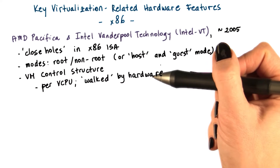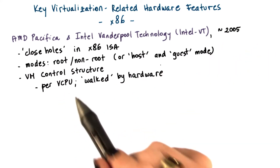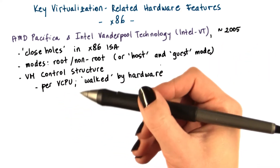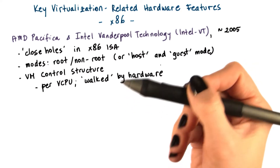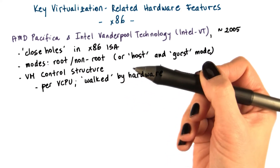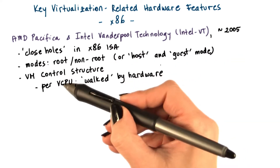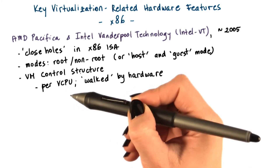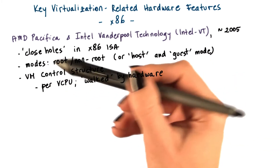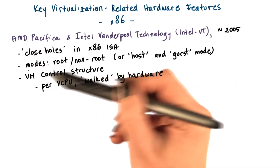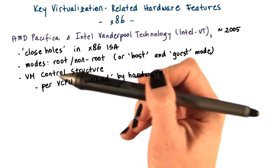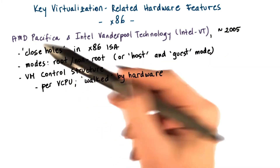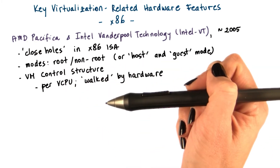Support was also added for the hardware processor to understand and interpret information that describes the state of the virtual processors, called vCPUs. This information is captured in a VM control structure, also called a VM control block in the AMD x86 architectures.